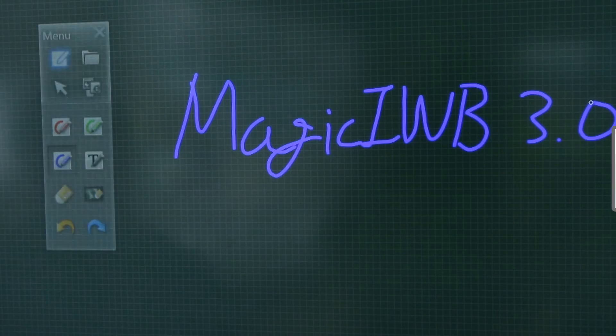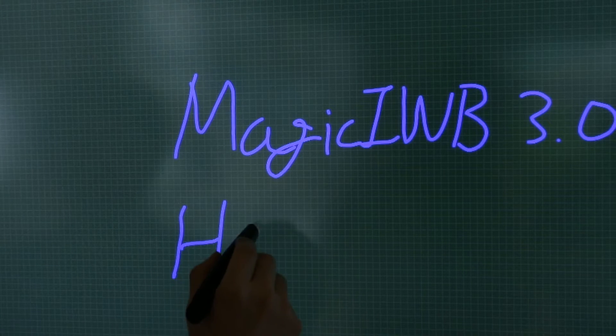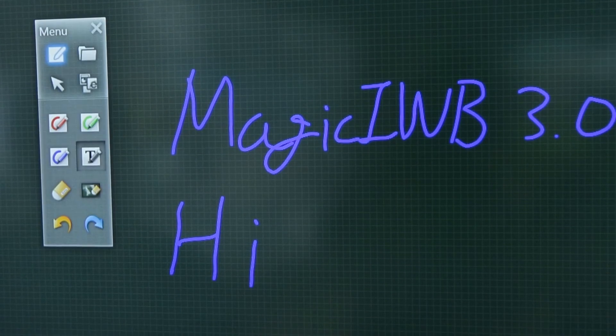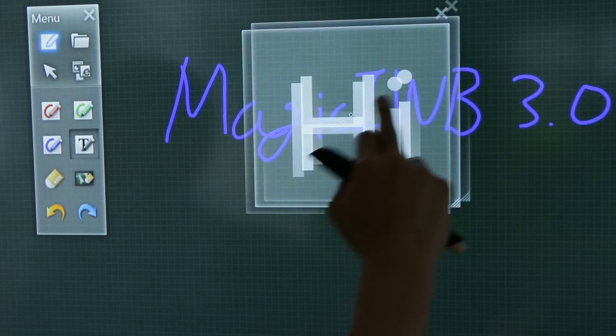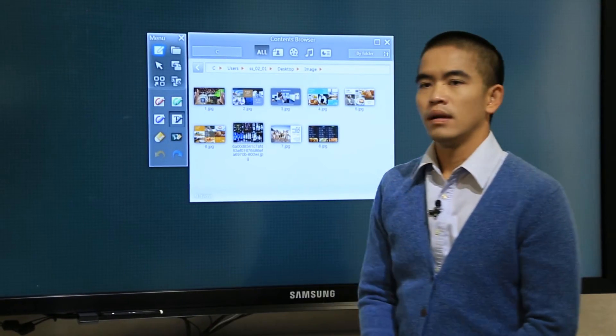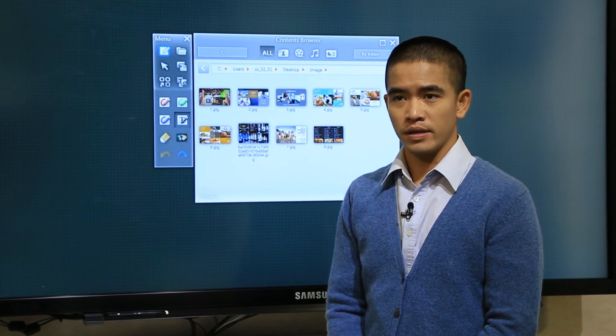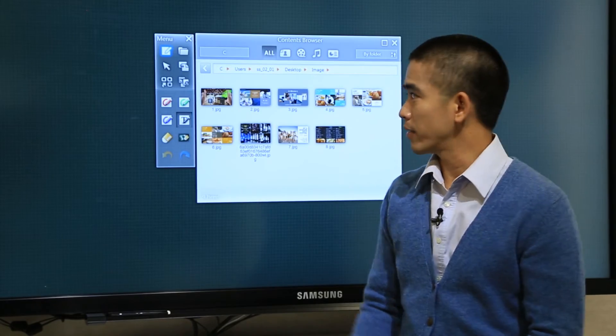The next feature enables automatic recognition of handwriting into typed text. Users can press the icon to convert handwriting into typed text. Handwriting will automatically be recognized and converted into typed text by the program.